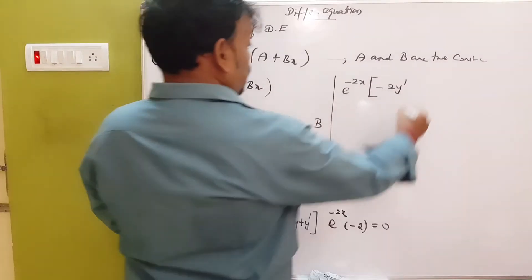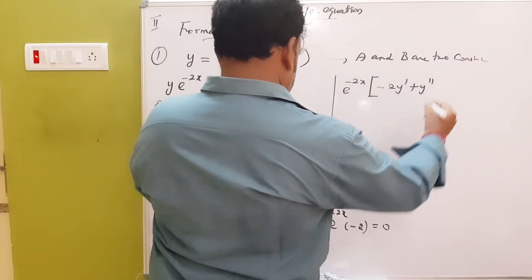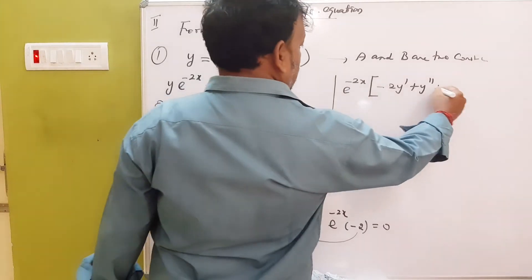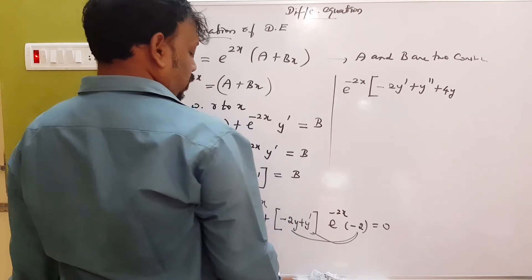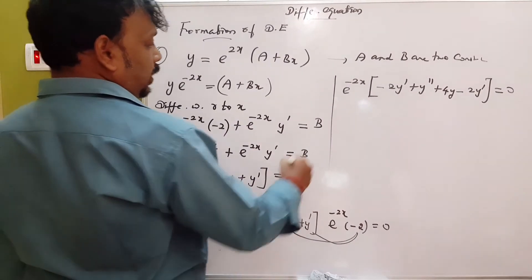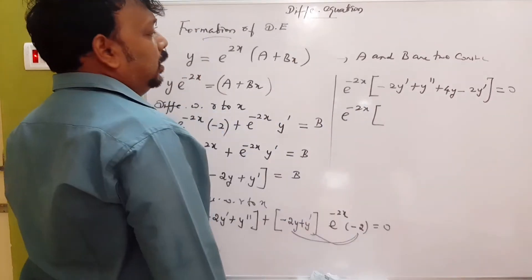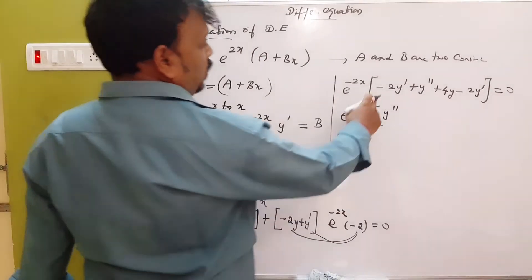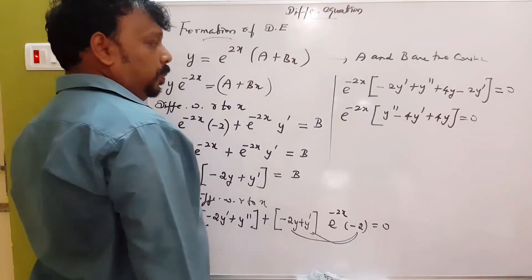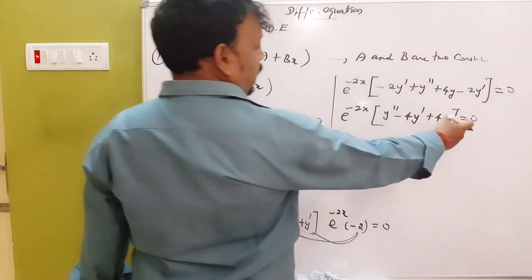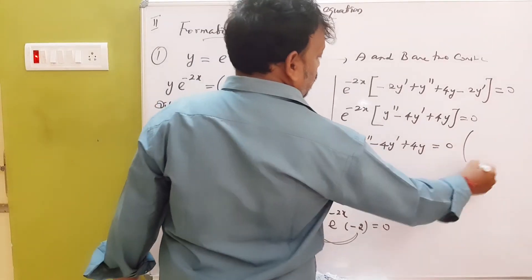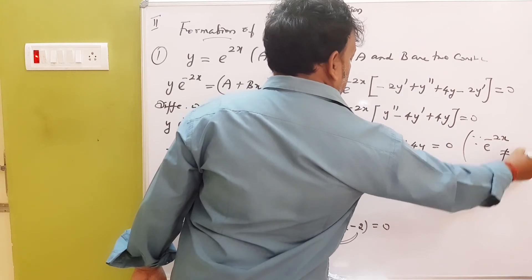2y dash plus y double dash, combined with 2y. We go to minus 2y plus 4y minus 2y dash, so minus 2y dash equals 0. Solving the method: y double dash minus 2y dash, then minus 4y dash plus 4y equals 0. So y double dash minus 4y dash plus 4y equals 0. Since e power minus 2x is not zero, this is our answer.